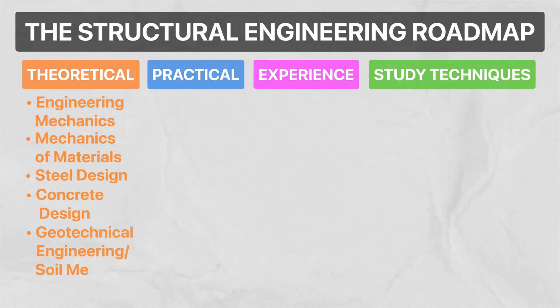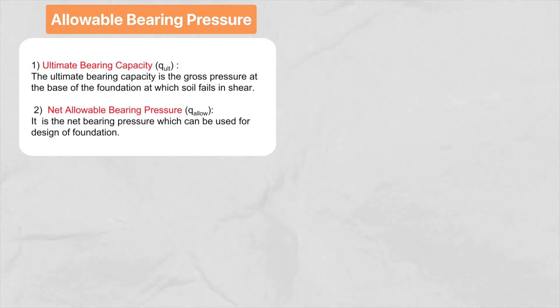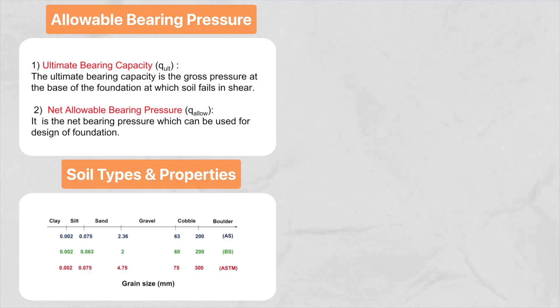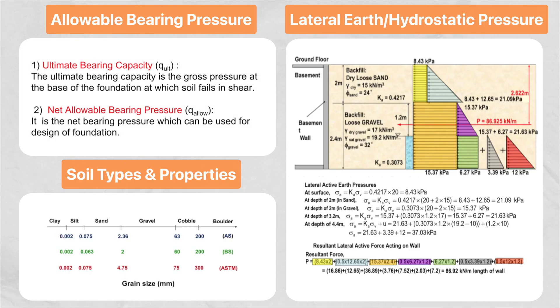Alright, so the last thing I've added to the theoretical column is geotechnical engineering slash soil mechanics. As a structural engineer, you do need to have a reasonable understanding about foundation properties, so the types of things that I would pay attention to here are allowable bearing pressure calculations, soil types and properties, and also lateral earth and hydrostatic pressure calculations for retaining wall design. Okay, so now that we've covered all the important theoretical concepts, let's move over to the practical column.